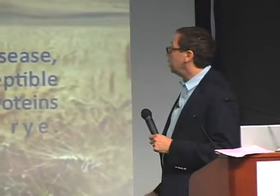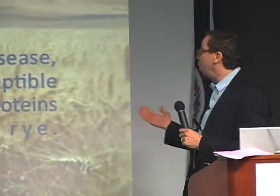So what is celiac disease? It's a systemic autoimmune disease occurring in genetically susceptible individuals triggered by gluten protein in wheat, barley, and rye.